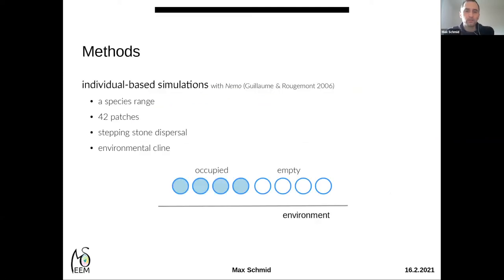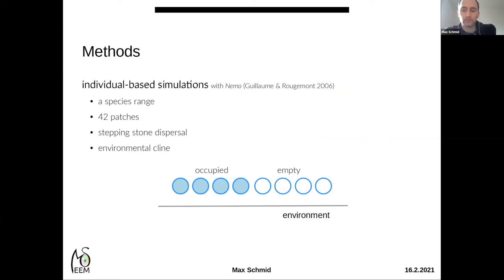To answer this question we used individual-based simulations with a software called Nemo, coded in C++, which allowed us to simulate an entire species range. The species range was composed of 42 patches linearly arranged, where individuals could inhabit these patches and migrate to neighboring patches following a simple stepping stone model.